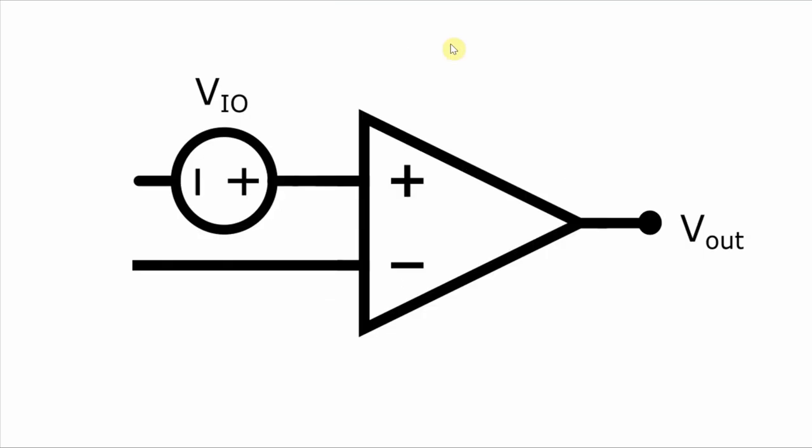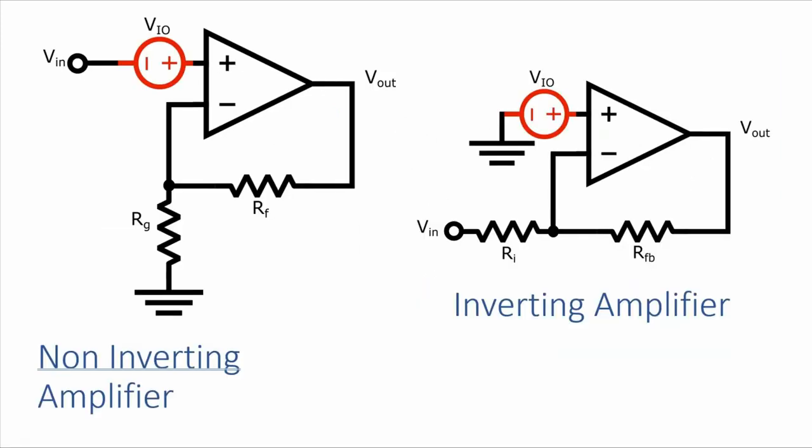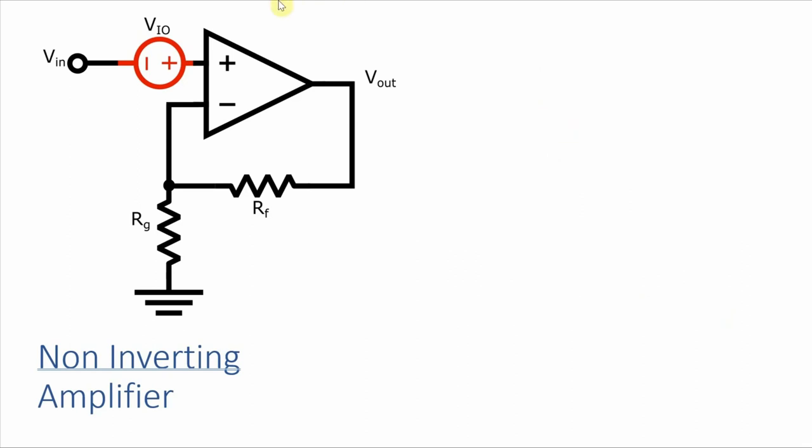Input offset voltage can range from less than one microvolt to more than tens of millivolts. And to make it even more challenging to deal with, it can change with temperature and even with time. These two circuits are the non-inverting amplifier and the inverting amplifier configurations with the input offset voltage included. And to get a better understanding of the input offset voltage, let's take a look at the impact of it on each of these circuits. Let's start with the non-inverting configuration.